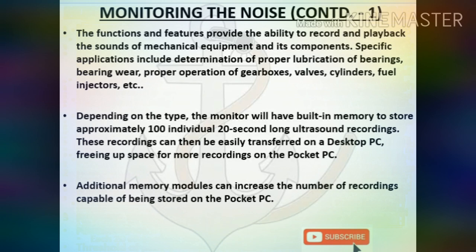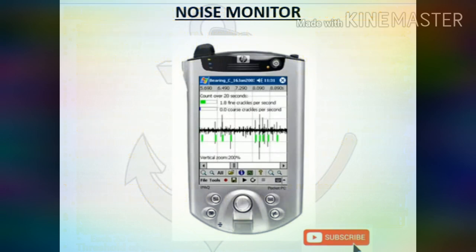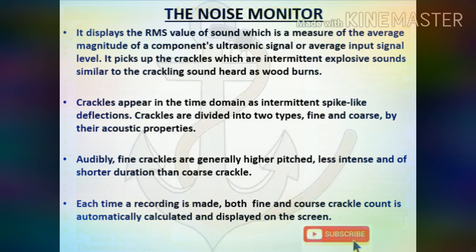Depending on type, the monitor will have built-in memory to store approximately 100 individual 20-second ultrasound recordings. These recordings can be easily transferred to a desktop PC, freeing up space for more recordings. Additional memory modules can increase the number of recordings stored. The device displays the RMS value of sound, which is a measure of the average magnitude of a component's ultrasonic signal. It picks up crackles, which are intermittent explosive sounds similar to crackling wood burns, appearing in the time domain as intermittent spike-like deflections. Crackles are divided into two types — fine and coarse — by their acoustic properties.